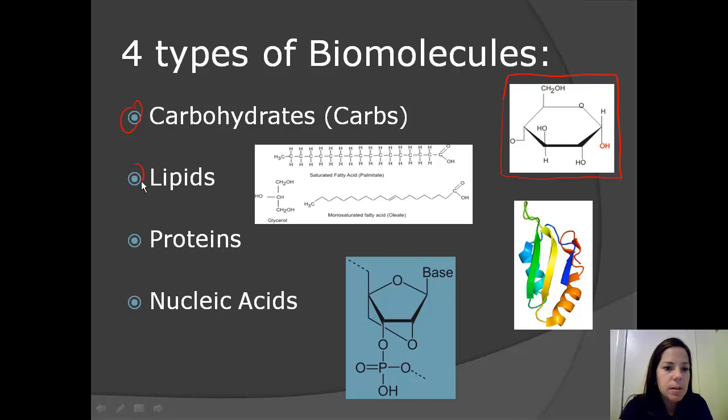So lipids is another type of biomolecule found in the human body. Some examples would be the saturated fatty acid, the monosaturated fatty acid, and glycerol. Saturated fats have many functions in the body that we're going to talk more about in depth. But one of them is insulation, to insulate and also to cushion the organs. Some examples that we would find lipids in food would be olive oil as well as butter.